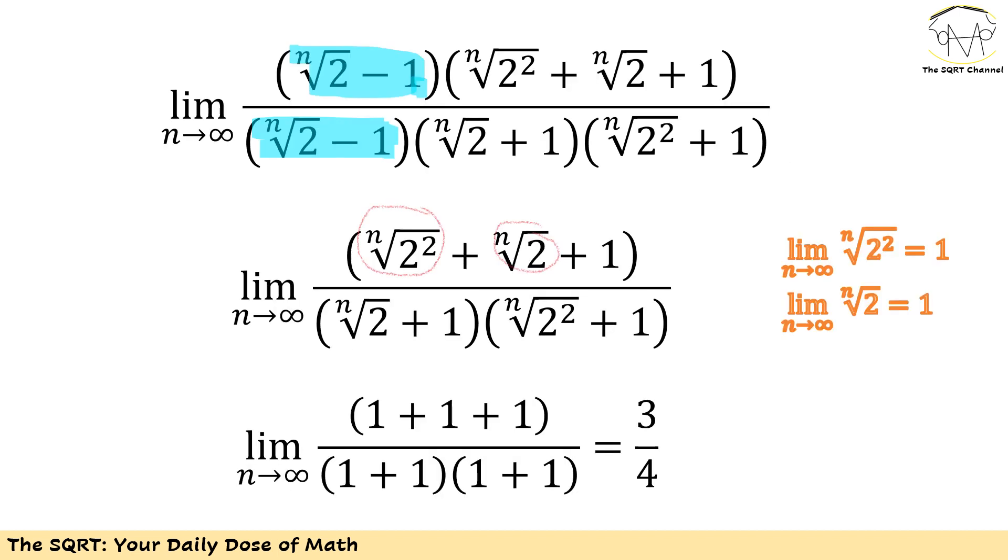Interestingly enough, we have the nth root of 2 minus 1 for both numerator and denominator of this fraction. So we can remove that, and what we have is something that is no longer 0 over 0.